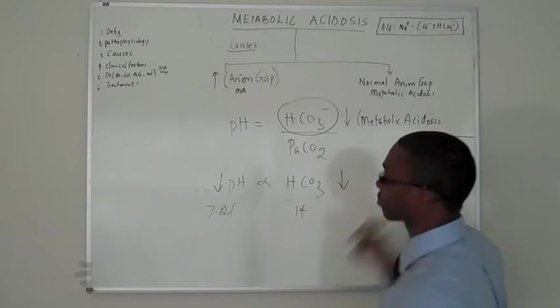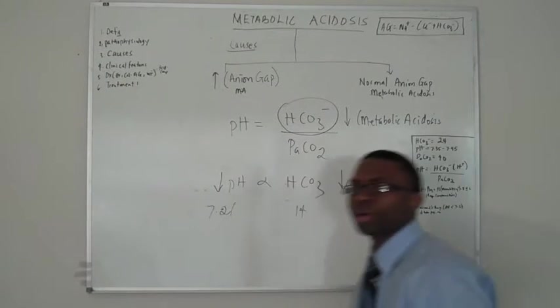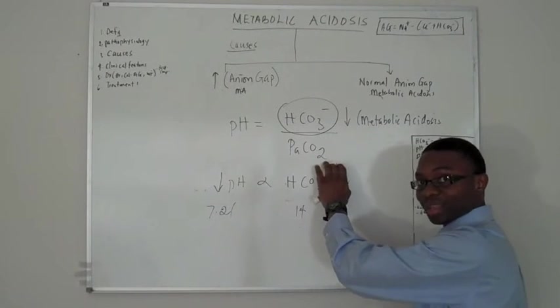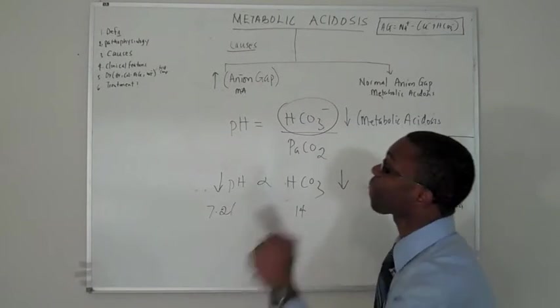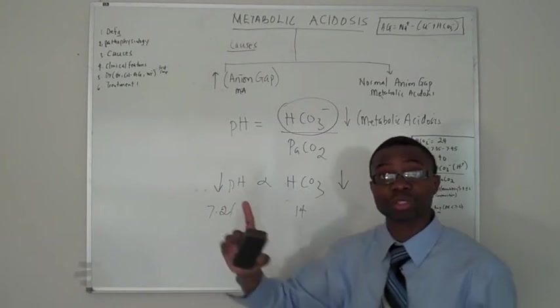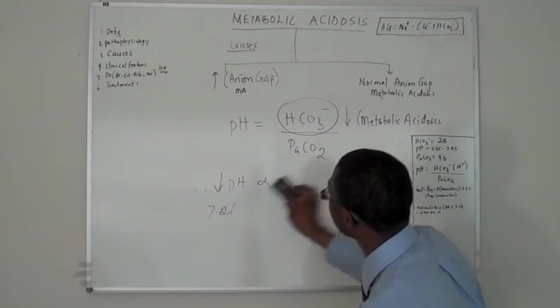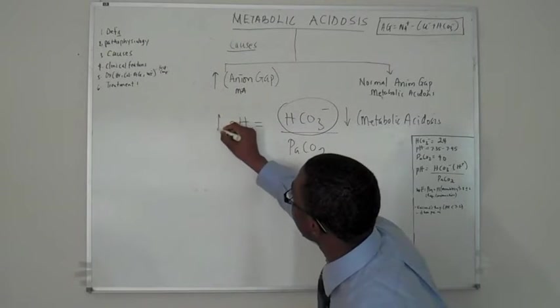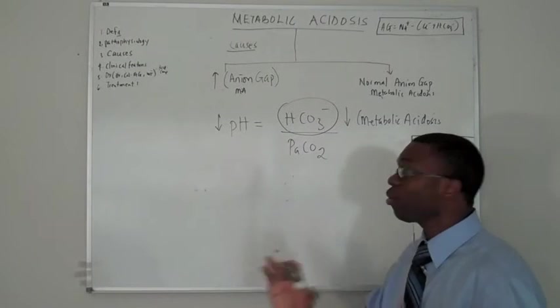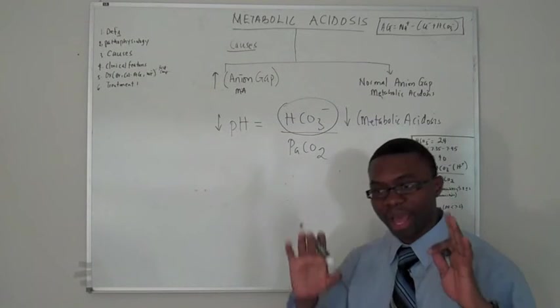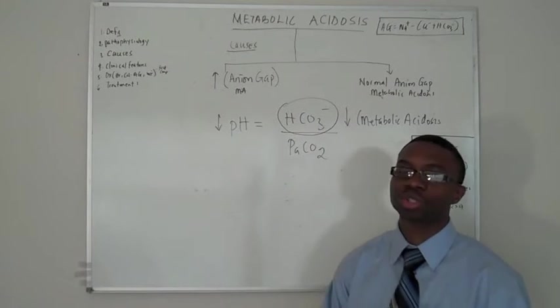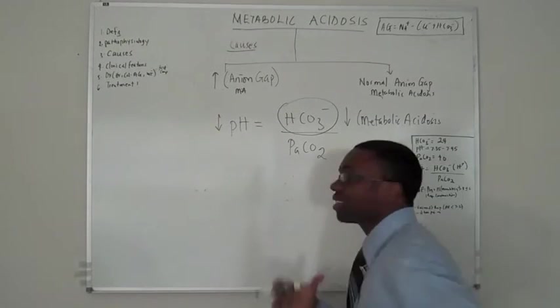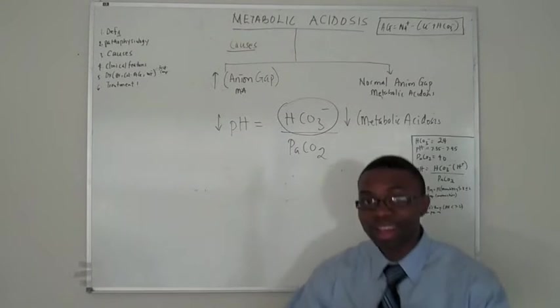Metabolic acidosis. Last lecture I said put metabolic on top and put respiratory at the bottom. That would come in when I talk about clinical features. Remind me. We would talk about that. This is the barrier between the lungs and your kidneys. Right there. Lungs, kidney. Get it?